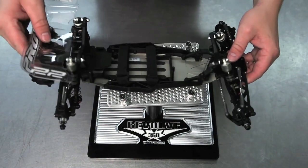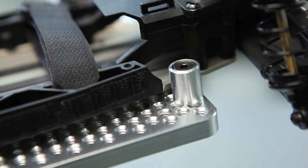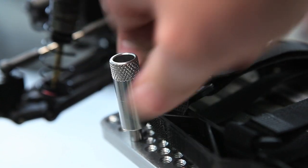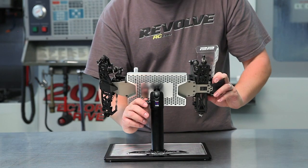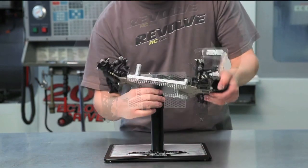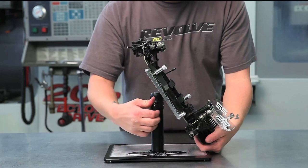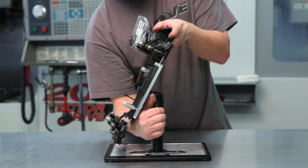The same goes for one-tenth scale buggies and short course trucks. This Losi 22 tenth scale buggy uses a small plate with two medium locking tabs and two locators. You'll be easily positioned in any direction you want to work on.